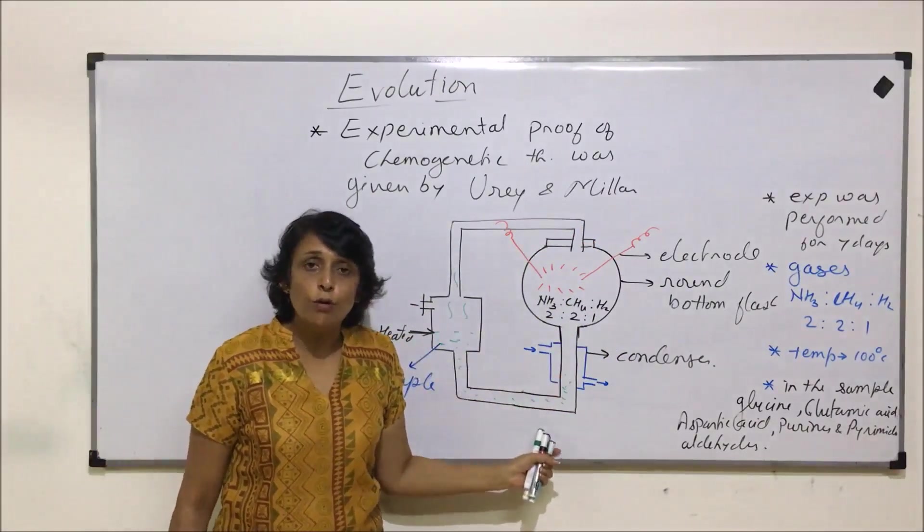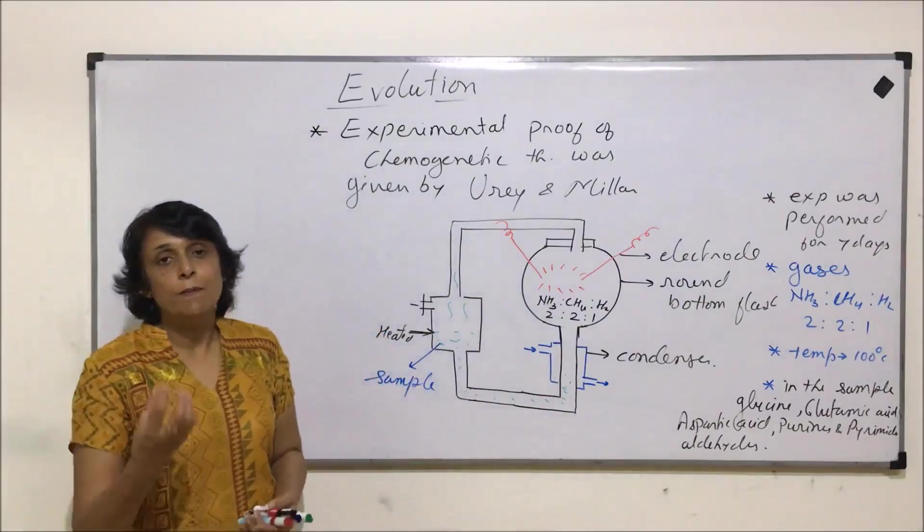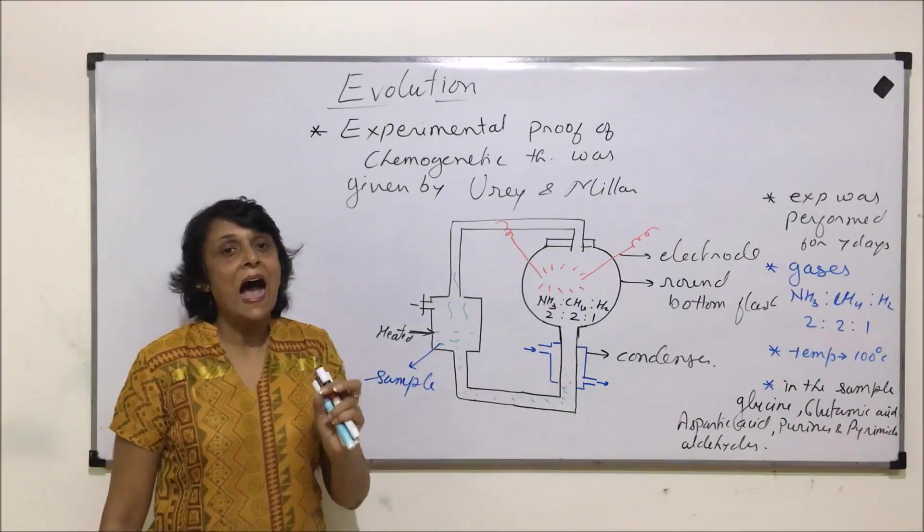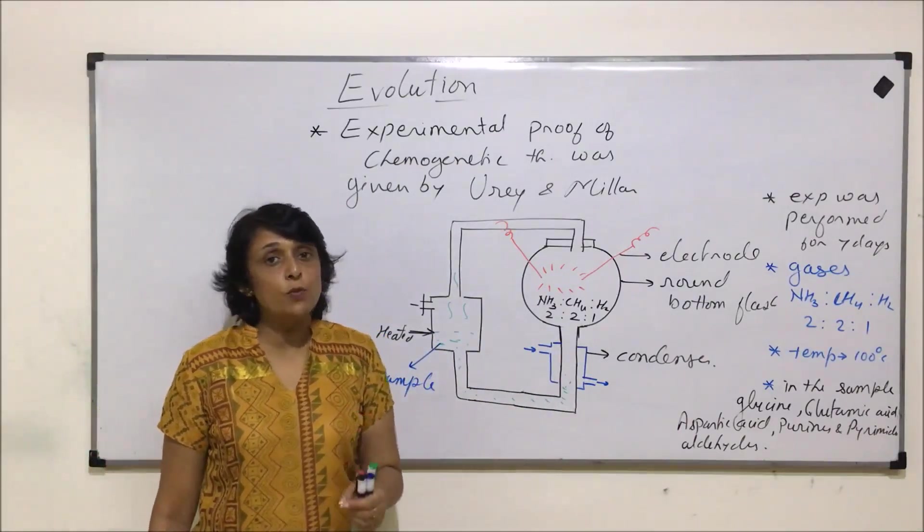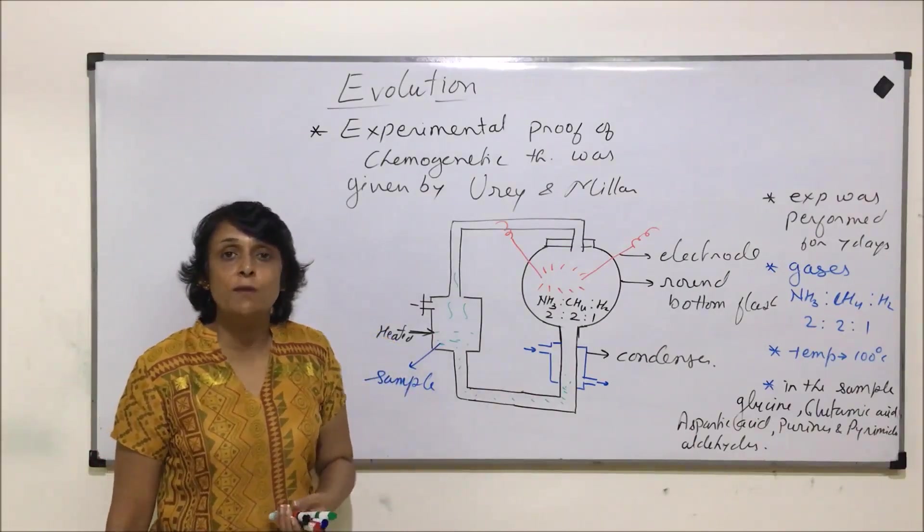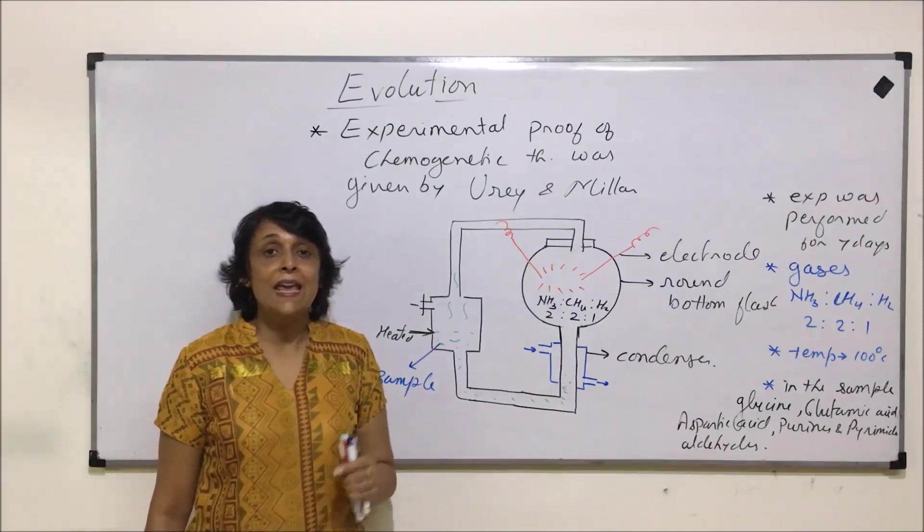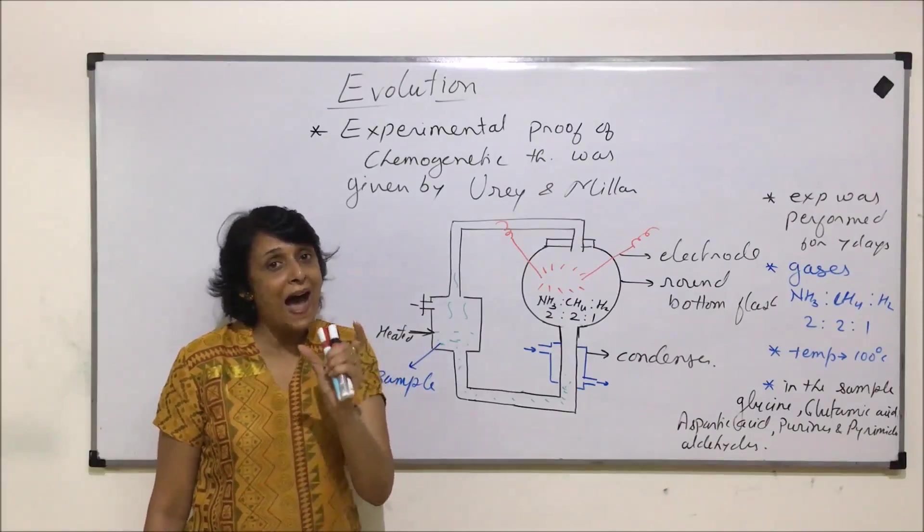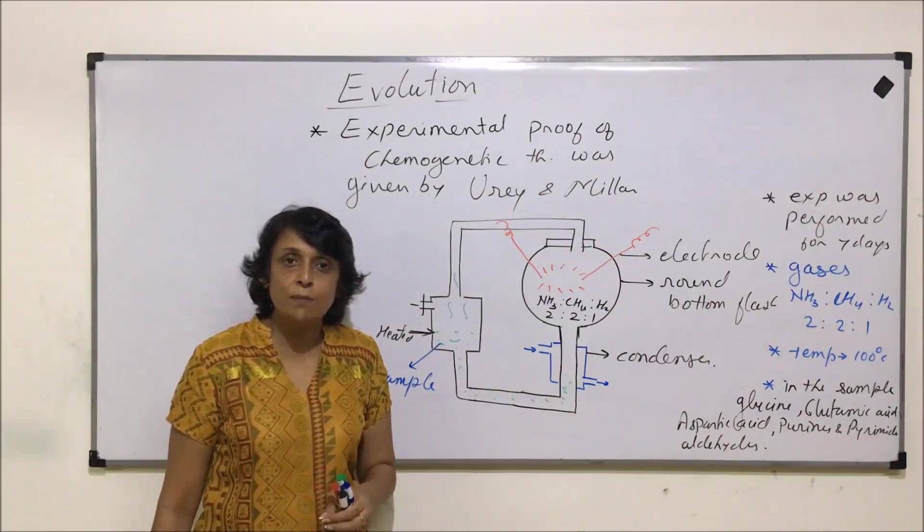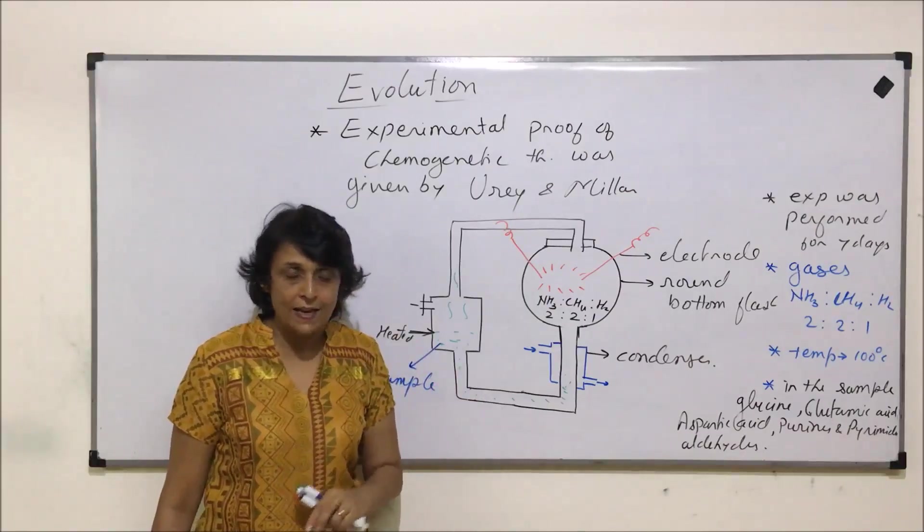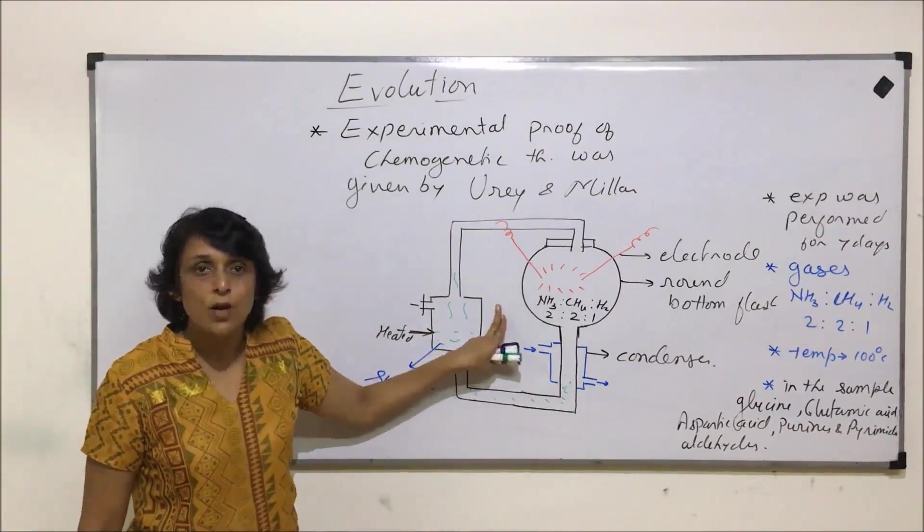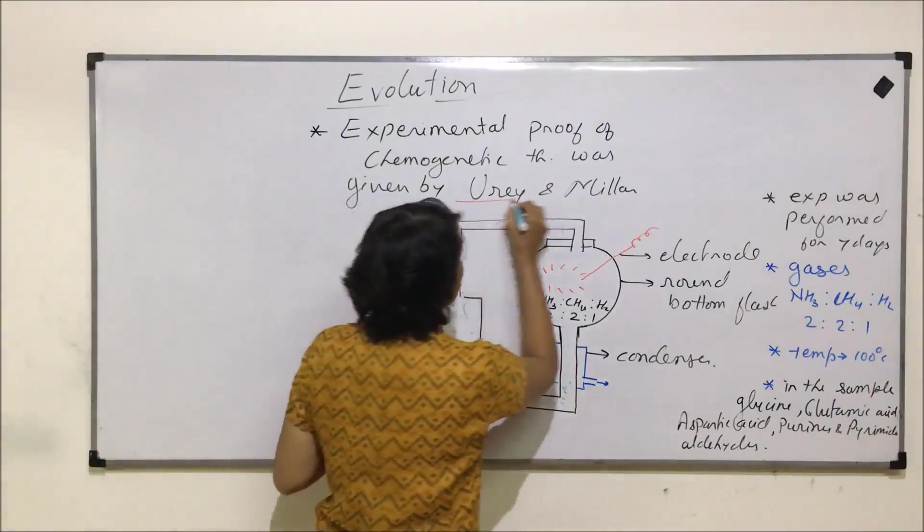When life originated, we believe that the first living forms must have had RNA as the genetic material. This idea was given to us by the experiments performed by Dr. Khurana, where he in vitro developed RNAs. It was believed that the first organisms which were formed had RNA as the genetic material, then DNA replaced that RNA. But chemical combination of those substances must have taken place in this manner.